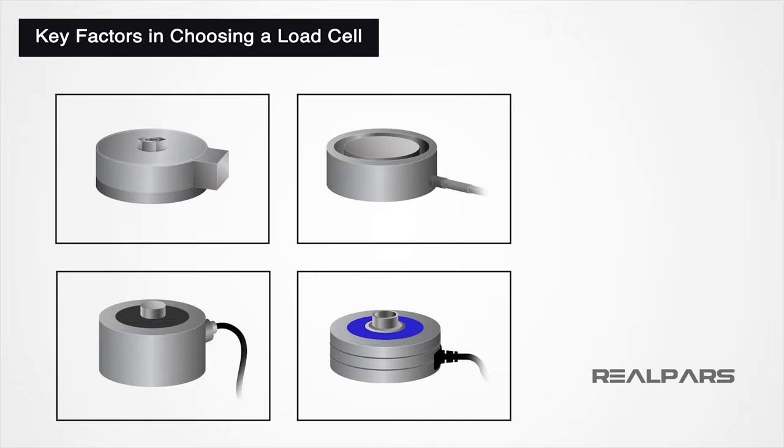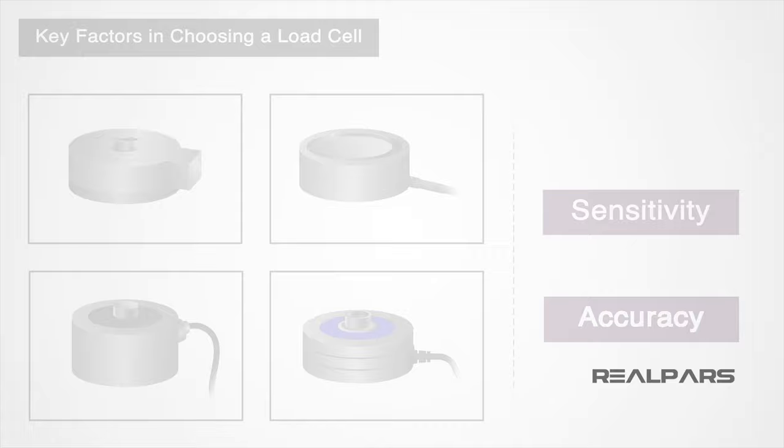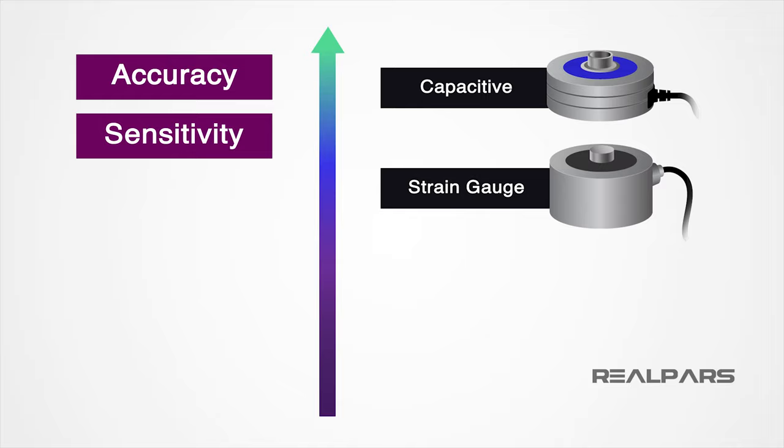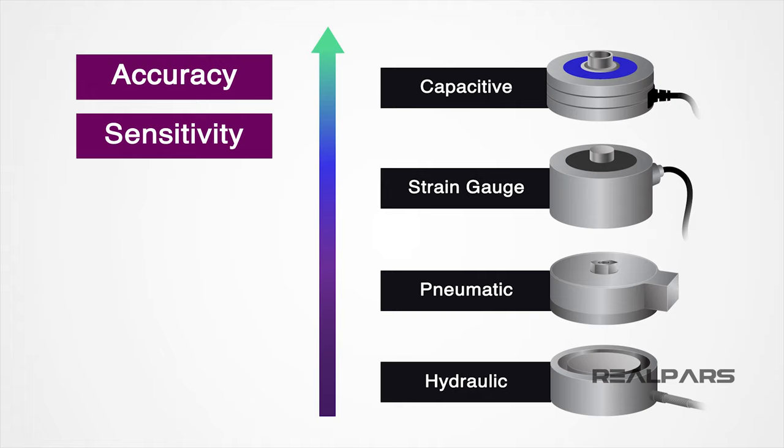Determining which load cell your application requires depends on how sensitive and accurate your application needs to be. The accuracy and sensitivity are very high with capacitive. A strain gauge type of load cell would be the next in line when it comes to accuracy and sensitivity. While still useful in certain applications, pneumatic and hydraulic load cells would be the least sensitive and accurate types.